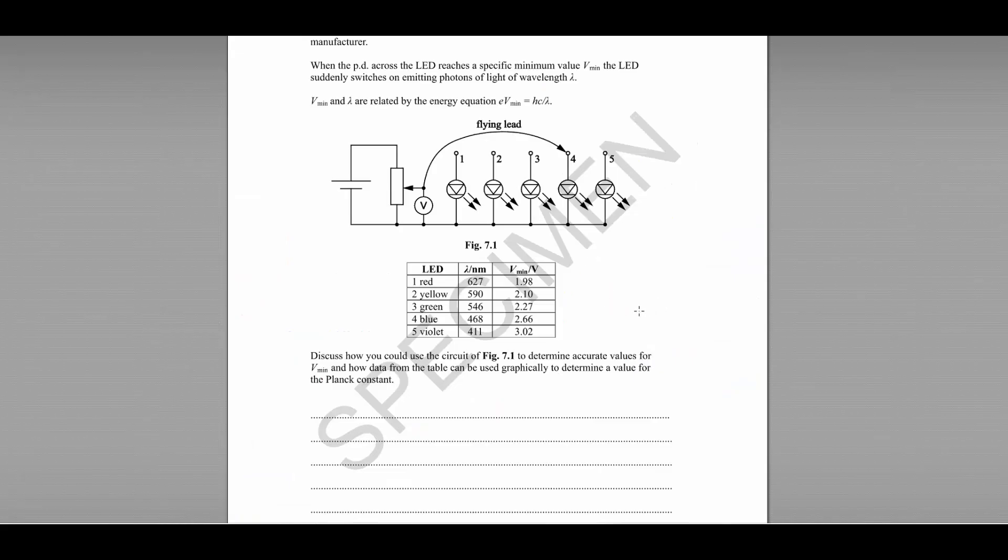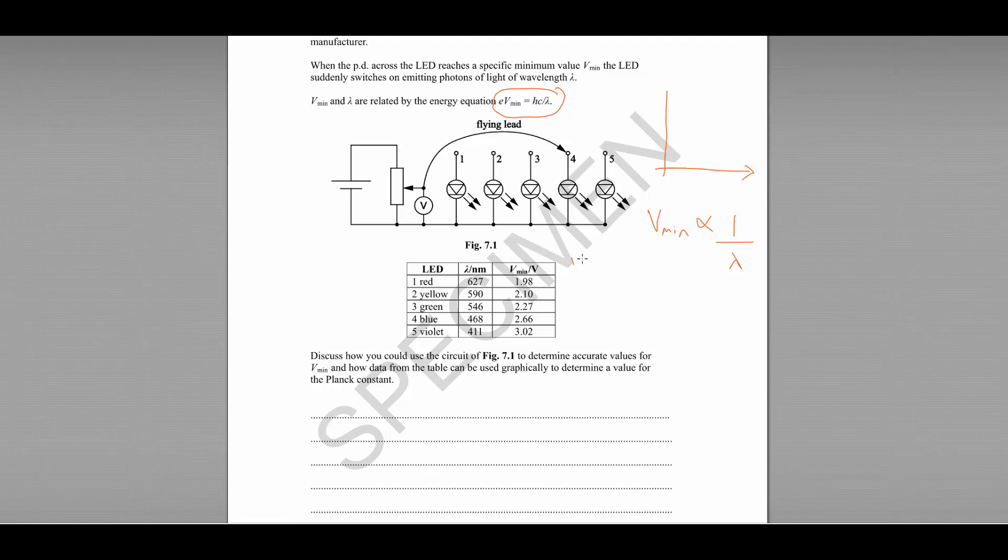In terms of the second part of our answer, processing the results, we can use our equation here: ev equals hc divided by lambda. If we're looking for the relationship between Vmin and lambda, you'll see here that the minimum voltage Vmin is proportional to 1 over the wavelength lambda. So you can plot a graph of these two quantities. The first thing you need to do, of course, is to calculate what 1 over lambda is. So you need to add that to your results table.